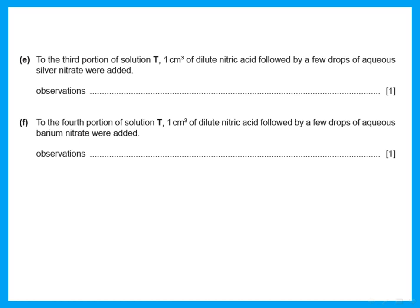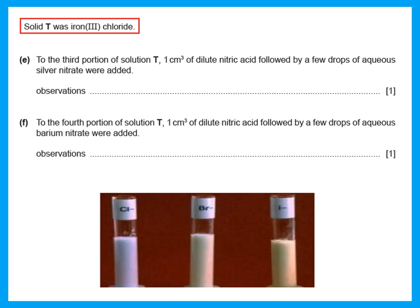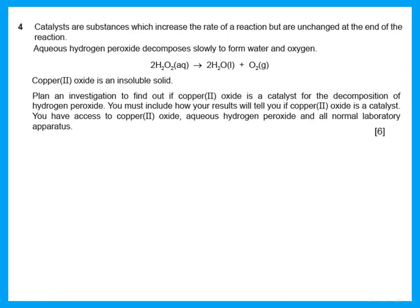To the third portion of solution T, 1 cm³ of dilute nitric acid was added followed by a few drops of aqueous silver nitrate. Silver nitrate tests for chloride, bromide, or iodide. Since we have chloride, this gives a white precipitate. (Bromide would give cream; iodide would give yellow.) To the fourth portion, 1 cm³ of dilute nitric acid followed by a few drops of aqueous barium nitrate — barium nitrate tests for sulfate. Since iron(III) chloride has no sulfate, there is no change.